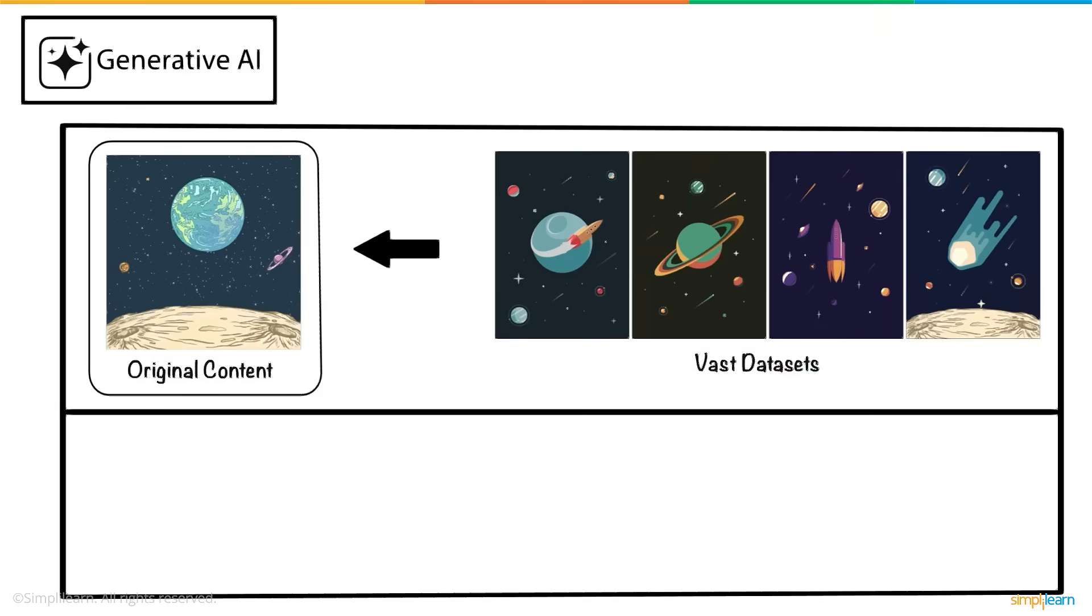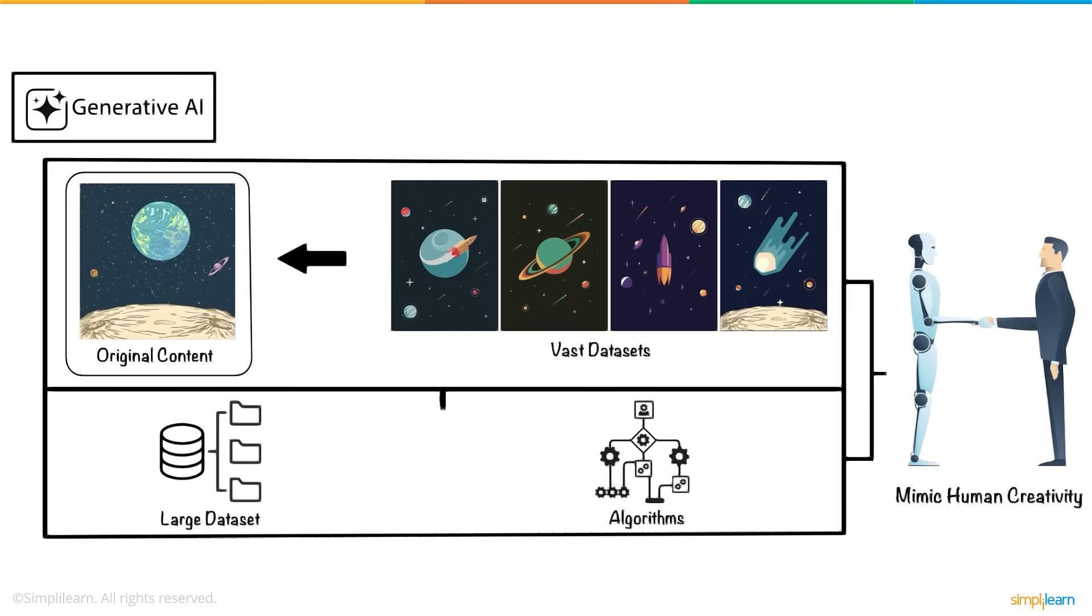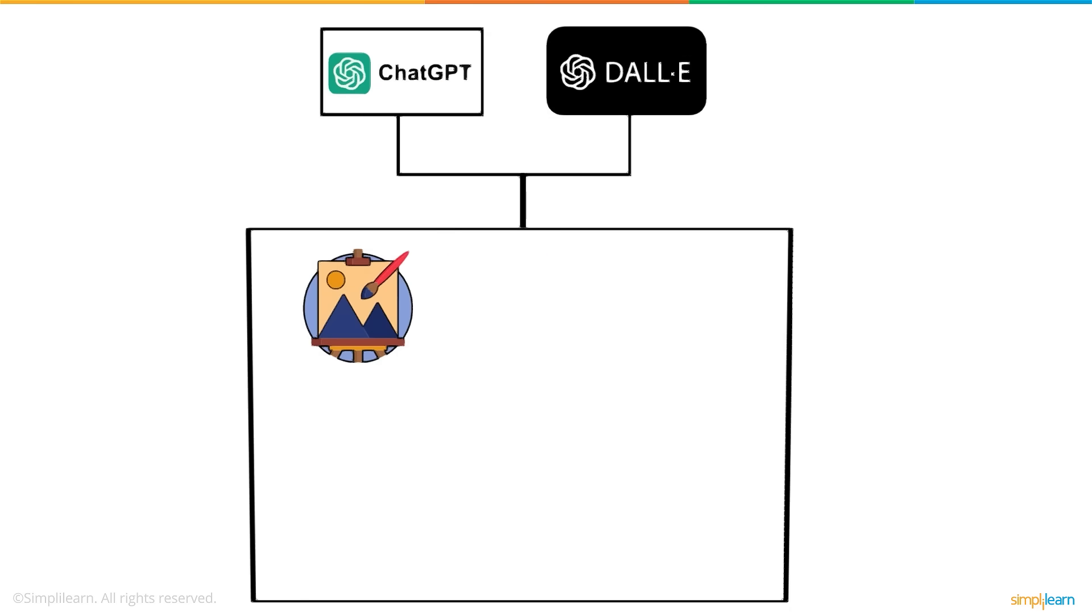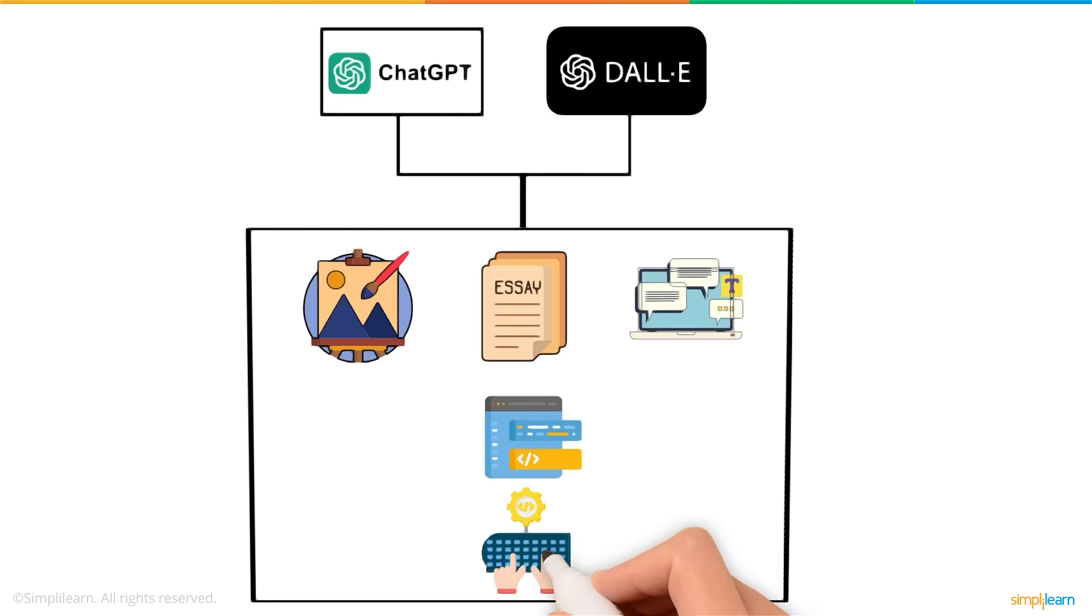These models are often trained on large amounts of data and use sophisticated algorithms to mimic human creativity. Tools like ChatGPT or DALL-E can create art, write essays, or simulate conversations by generating outputs based on user prompts.